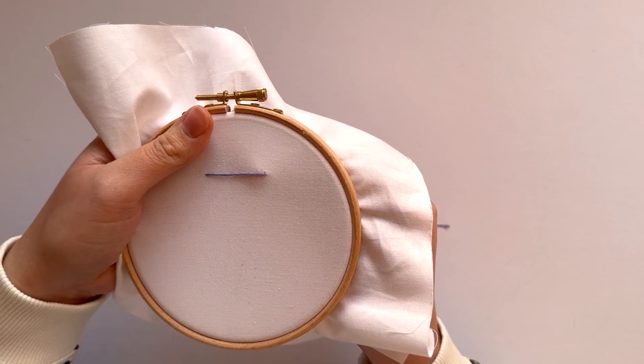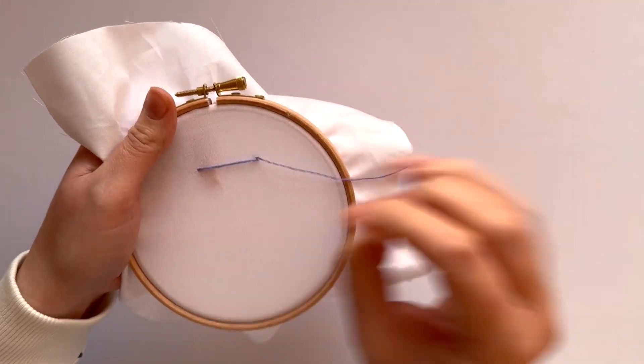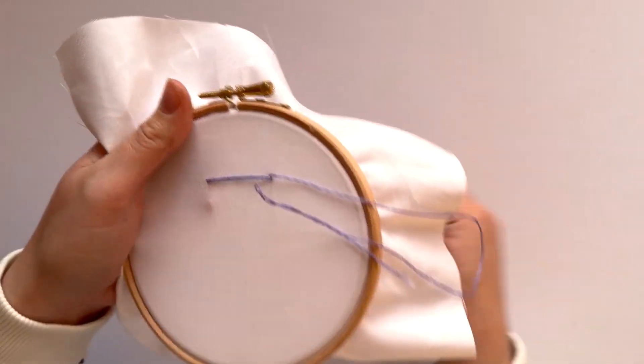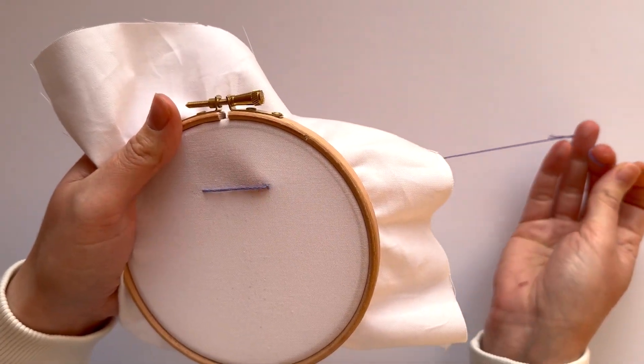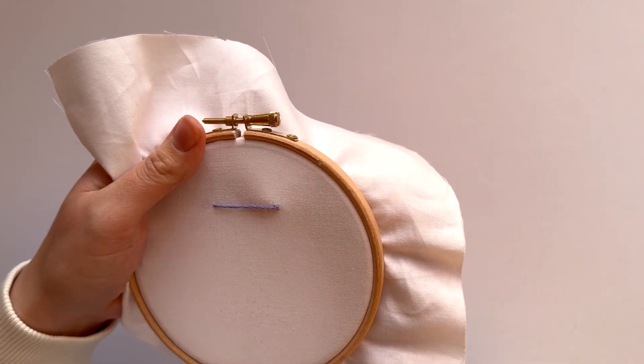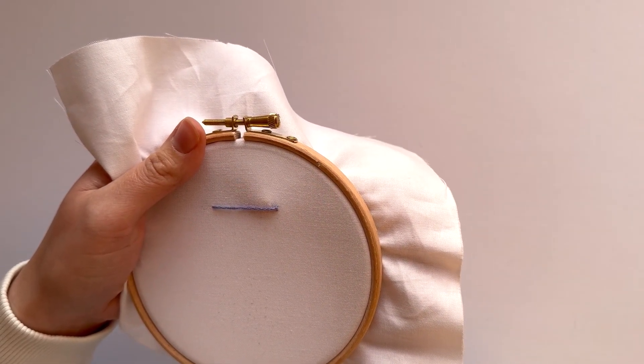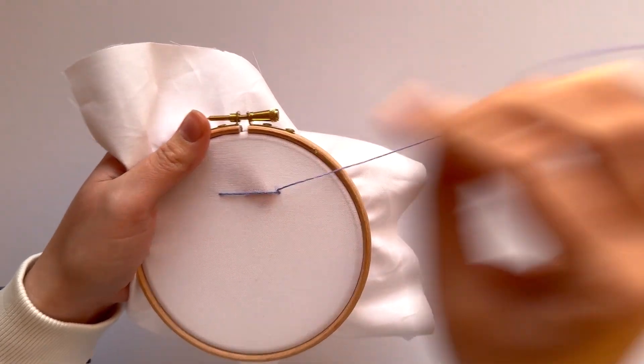So satin couching is very similar to normal couching. You're stitching over this couch thread, but with the satin couching what you're doing is you're stitching the stitches over the top very close together to create a satin effect.